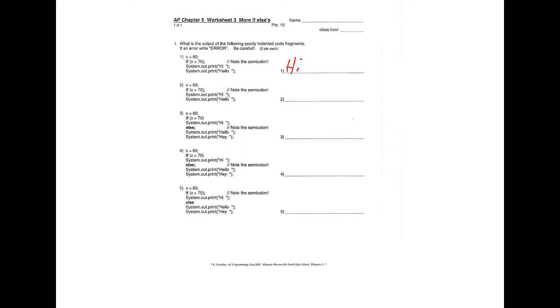Now working with if statements. For the first one: x equals 80, and there's an if statement with a semicolon right after it — that semicolon ends the if statement immediately. So it doesn't matter whether x is actually greater than 70 or not; it's still going to print 'hi' and 'hello.' Same thing when x equals 60 — the semicolon ends the if statement, so both 'hi' and 'hello' print regardless.